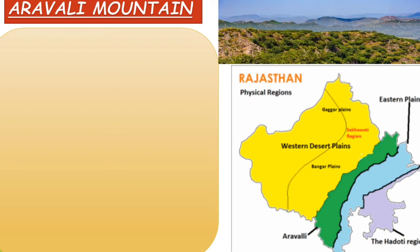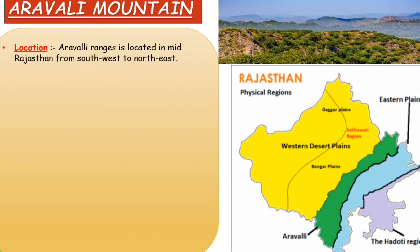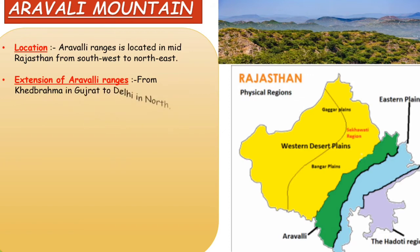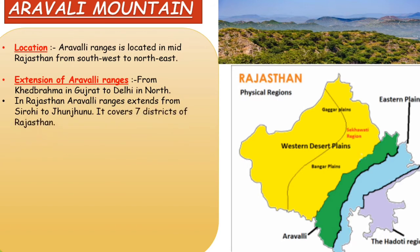After discussing the Thar Desert, now we will study the Aravalli Mountain Range. Number one: Location — the Aravalli Range is located in the mid-range of Rajasthan, running from southwest to northeast. It enters Rajasthan in the southwest at the Sirohi district and extends to Jhunjhunu district in the northeast. In terms of all of India, the range extends from Khedbrahma in Gujarat to Delhi in the north.